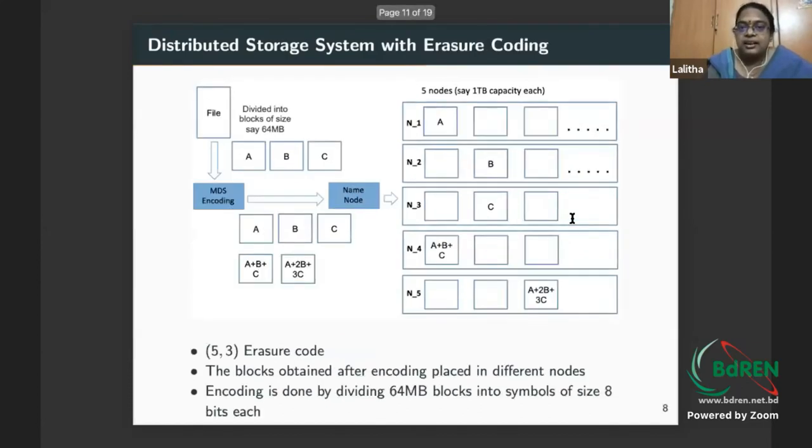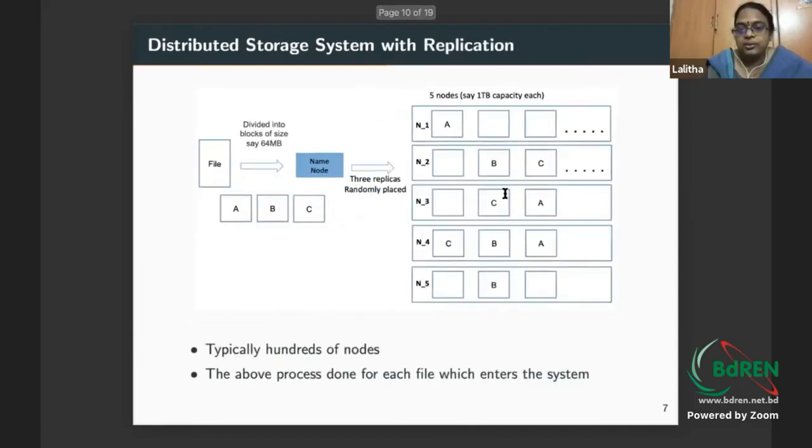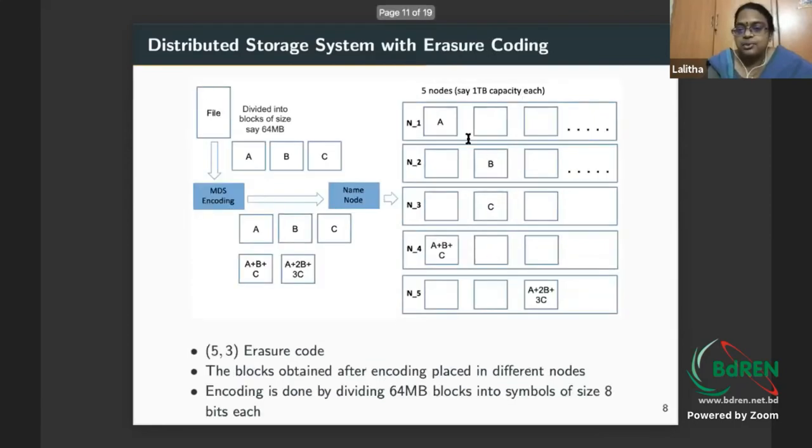Codes become helpful in the sense that you don't just store replicas but you store some linear combinations of the packets. Here, coded data A, B, C are normal, but A plus B plus C - semantically doesn't make any sense but gives the redundancy you want. Previously I was doing nine copies; here I'm storing five but it gives the same tolerance to failures. That's why these are very popular.